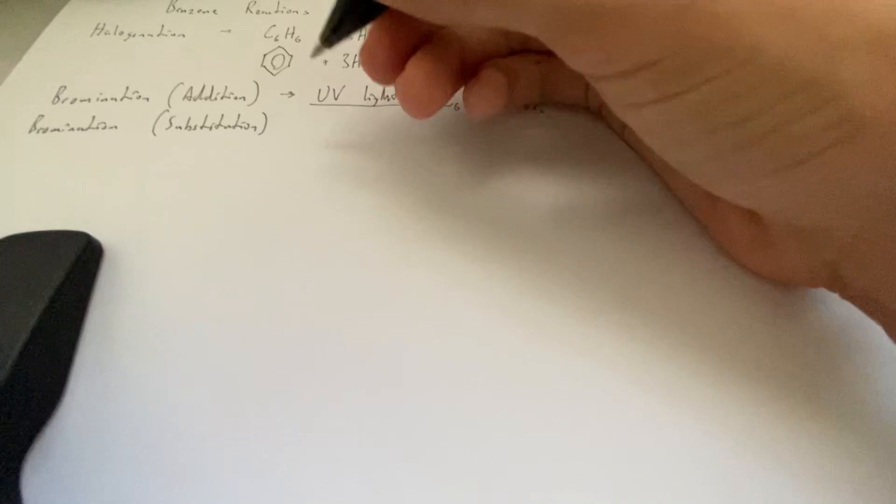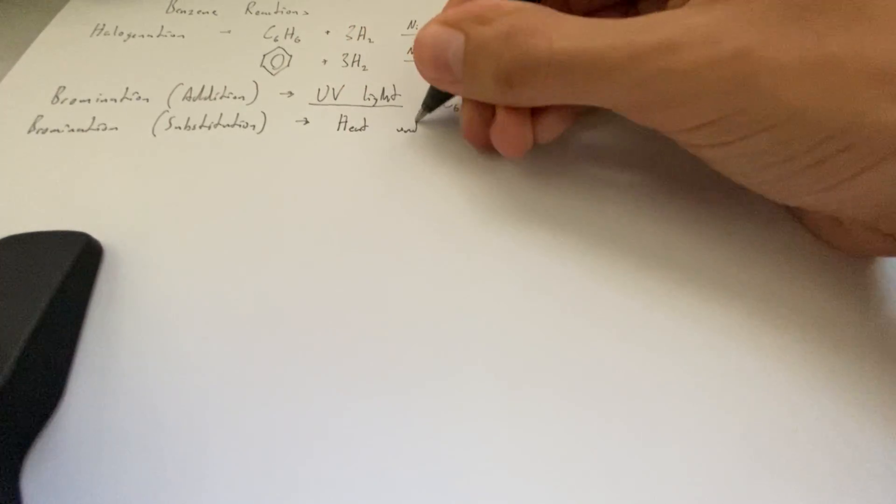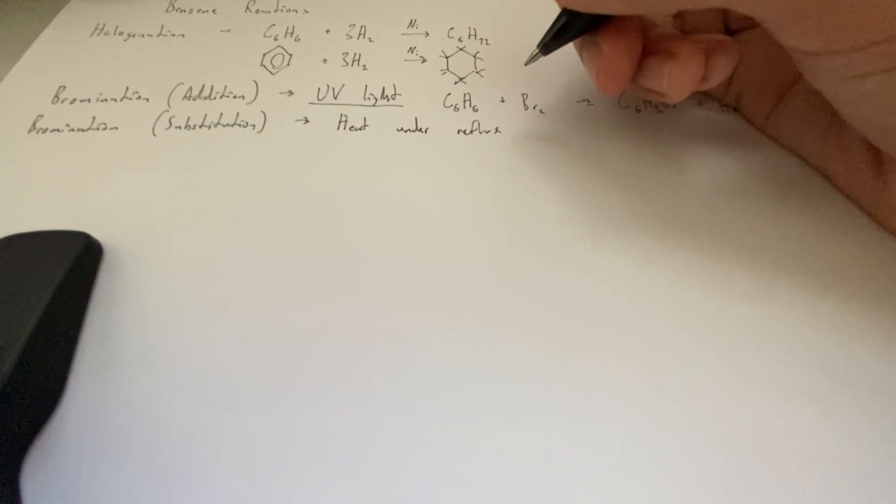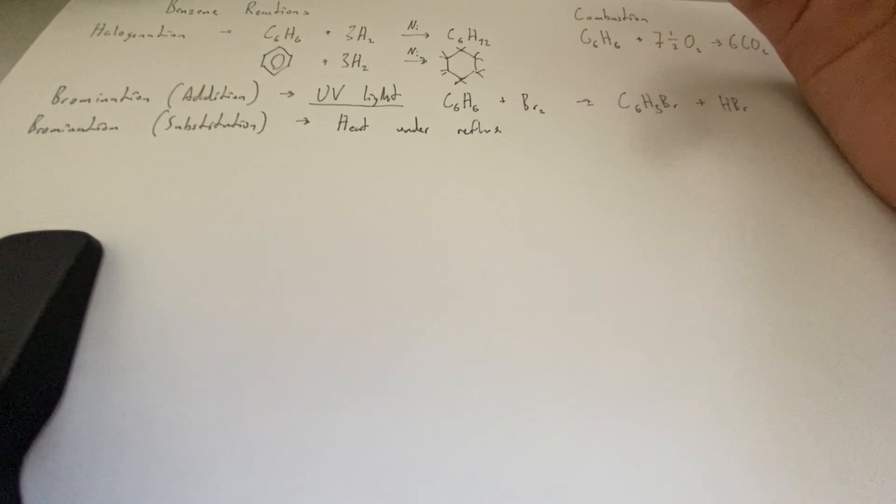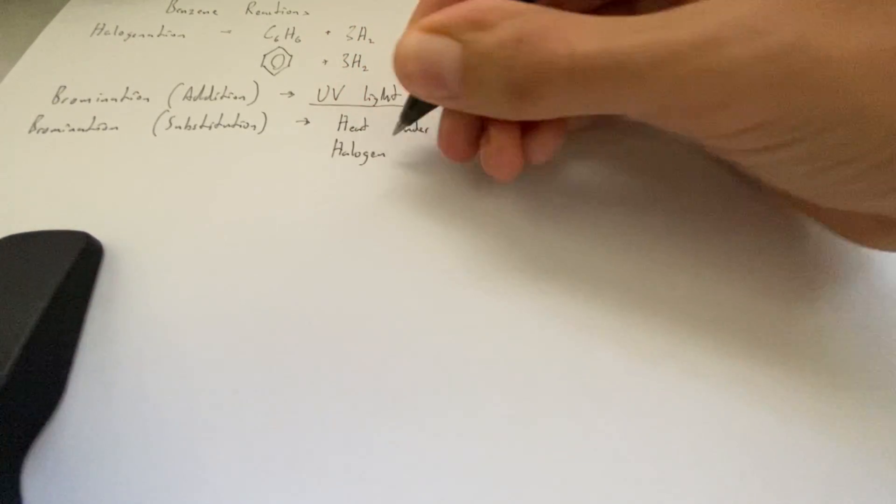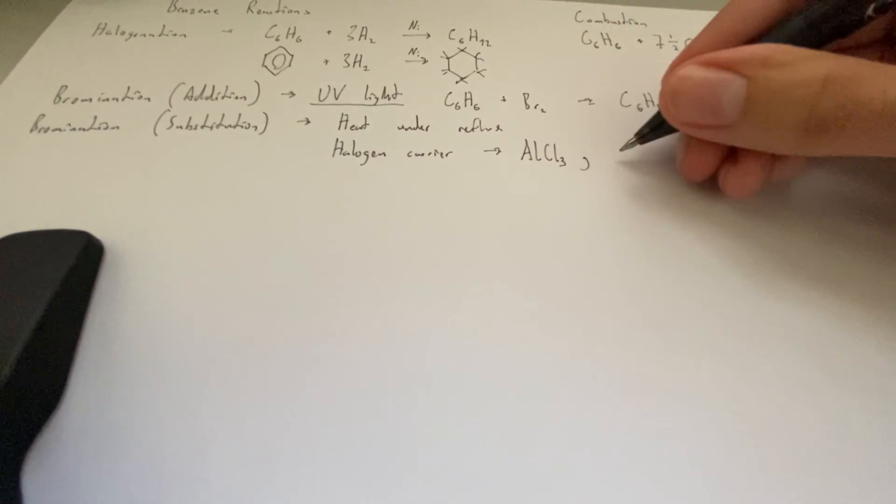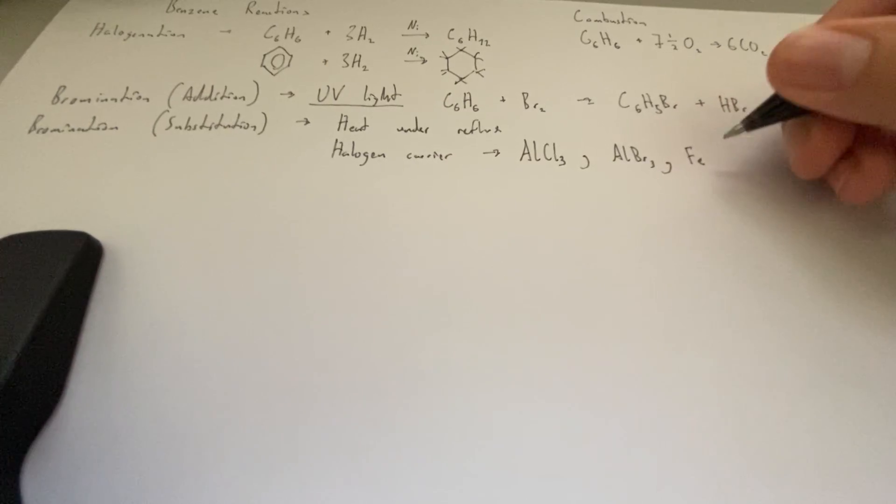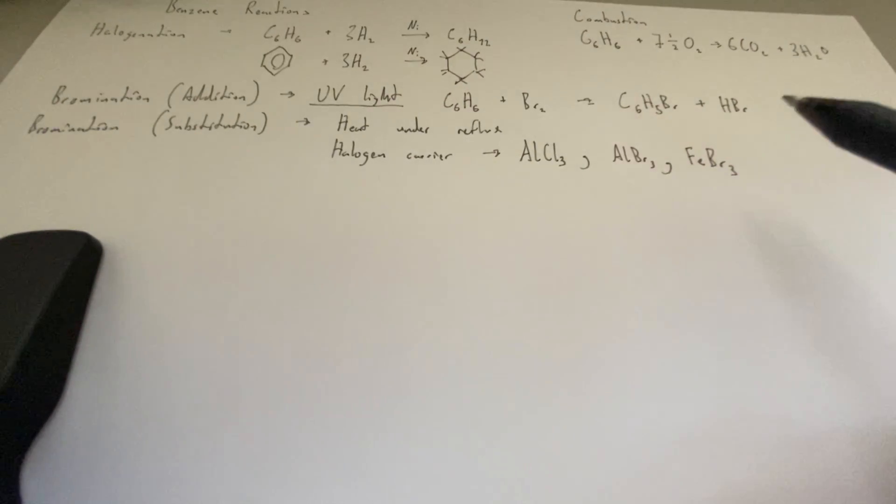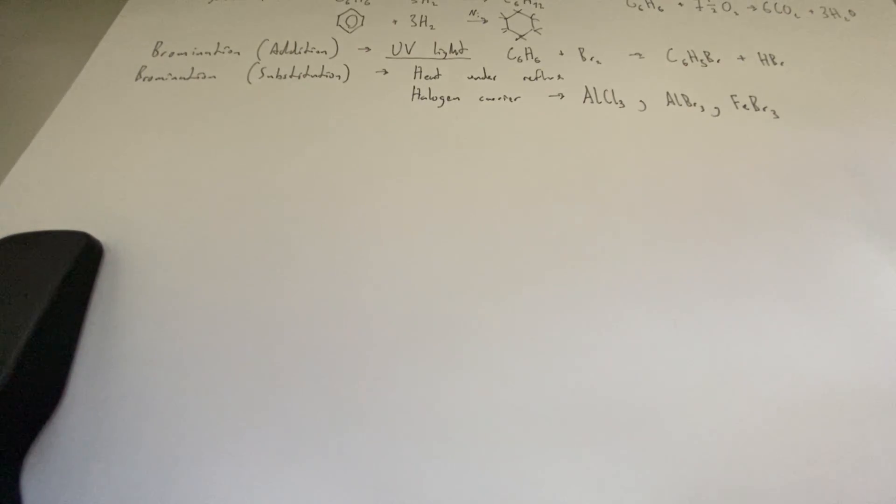Let's do bromination substitution. This is the more interesting one. We don't need UV light for this, but we do need to heat it under reflux with ethanol. And like pretty much all Friedel-Crafts reactions we need a halogen carrier. These can be something like aluminium chlorides, aluminium bromides, but we could also have iron(III) bromides.